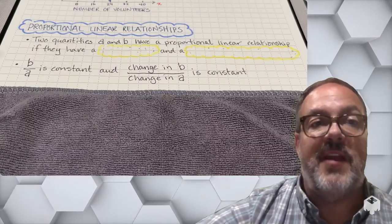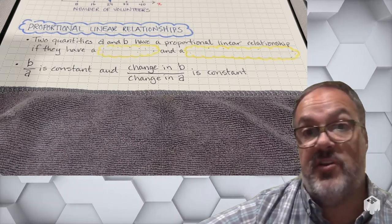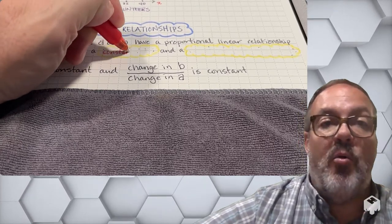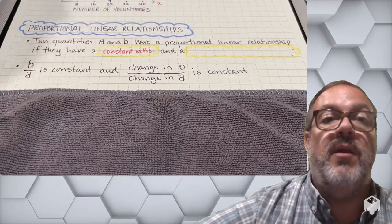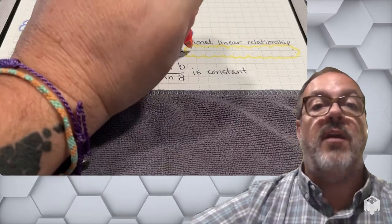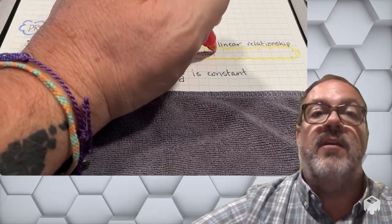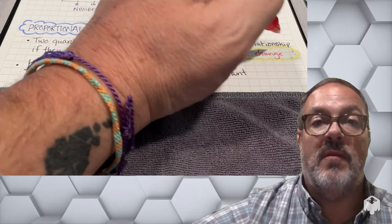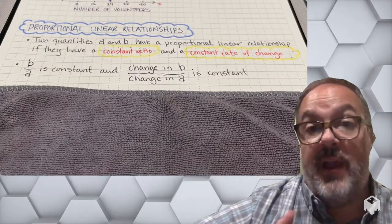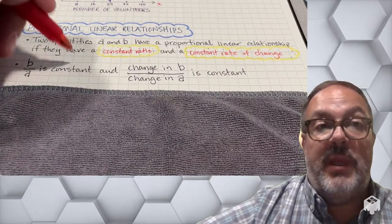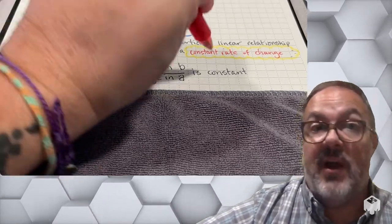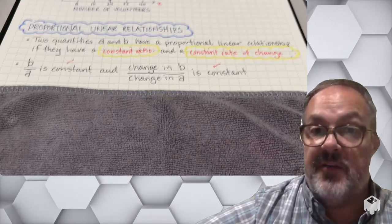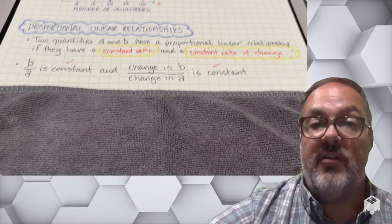In this next section we want to look at proportional linear relationships — not just something that's a line, but that it's proportional. In order for a relationship to be a proportional linear relationship, there has to be both a constant ratio and a constant rate of change. If b divided by a is constant and the change in b divided by the change in a is constant, then it's going to be a proportional linear relationship.